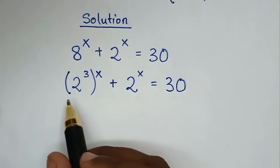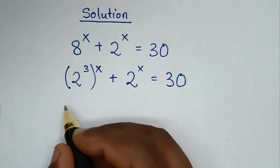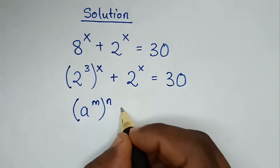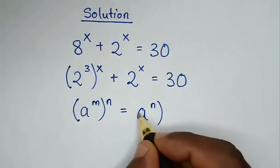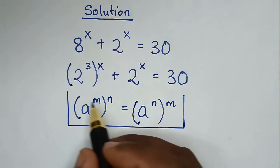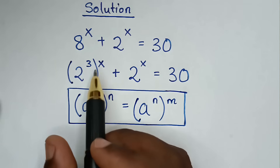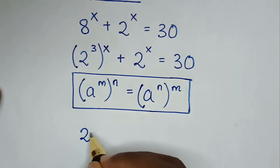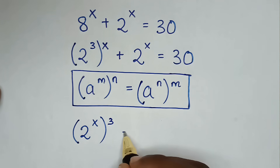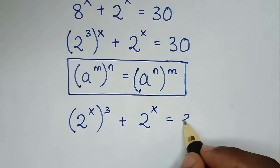In the next step, we apply the exponential rule. This part is in the form (a^m)^n = a^(n·m). So we take the power of x inside and power of 3 outside, giving us (2^x)³ + 2^x = 30.